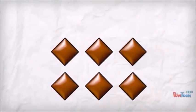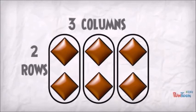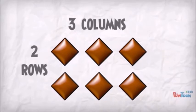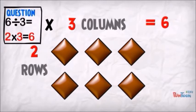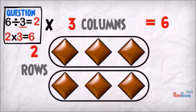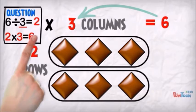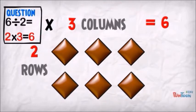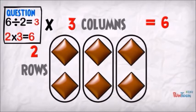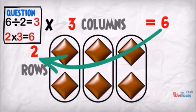This array has 2 rows and 3 columns — you can count it and see 6. You can multiply any array: 2 rows times 3 columns is 6. If we have the question 6 divided by 3, we are making groups of 3 — you can see we get 2 groups of 3, so 6 divided by 3 is 2. If our question is 6 divided by 2, we are making groups of 2 — you can see we get 3 groups of 2, so 6 divided by 2 is 3.